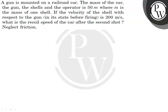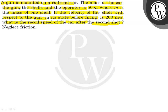Hello, let's see this question. The question says a gun is mounted on a railroad car. The mass of the car, the gun, the shell and the operator is 50m, where m is the mass of one shell. If the velocity of the shell with respect to the gun before firing is 200 meters per second, what is the recoil speed of the car after one shot? Neglect friction.